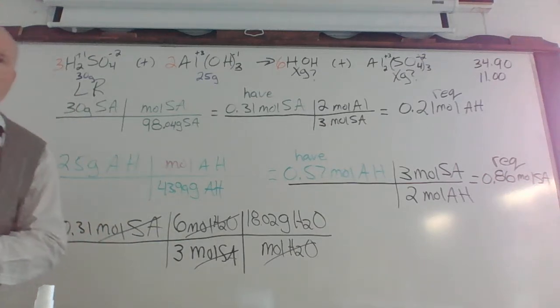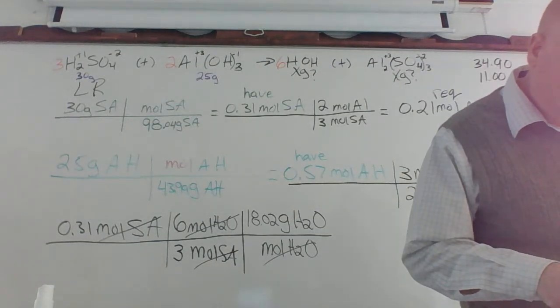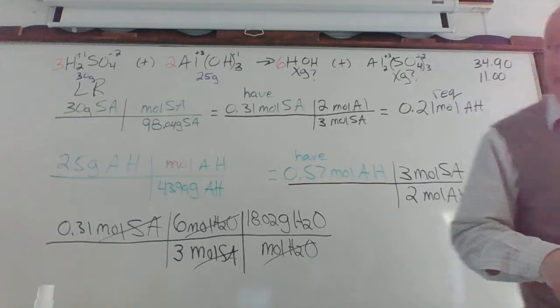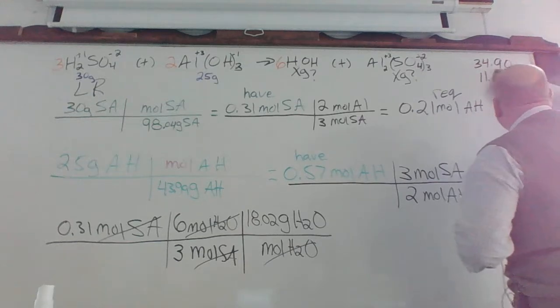Up in that upper right-hand corner, I wrote 34.9 and 11.0. Which one of those is correct? I got 11.5. Yeah, 11.17. We'll go ahead and go with that.